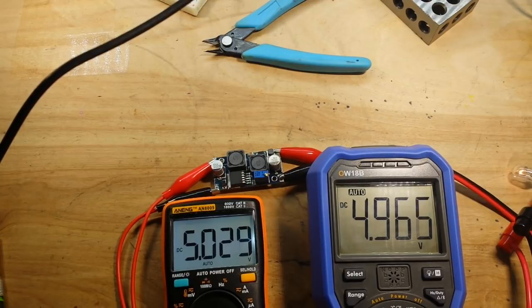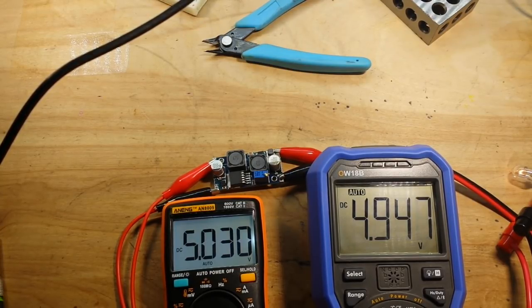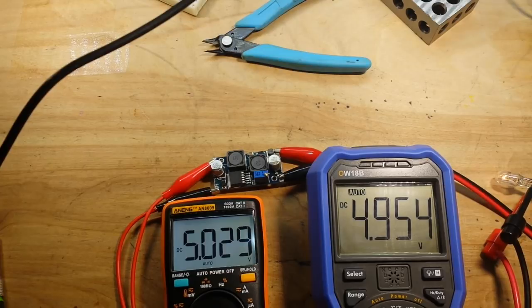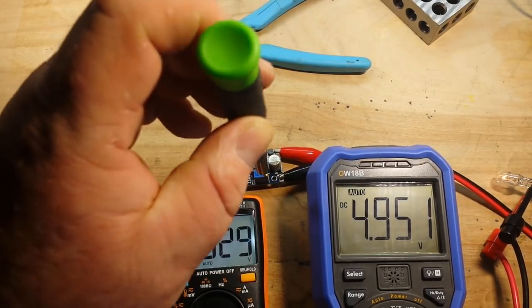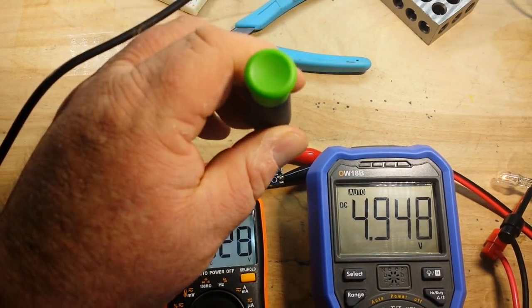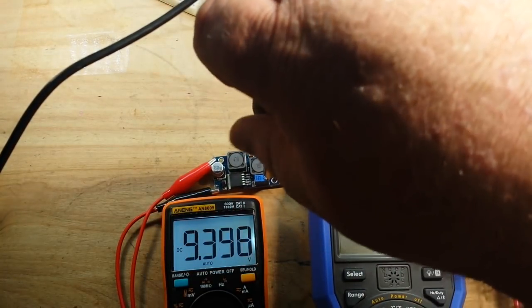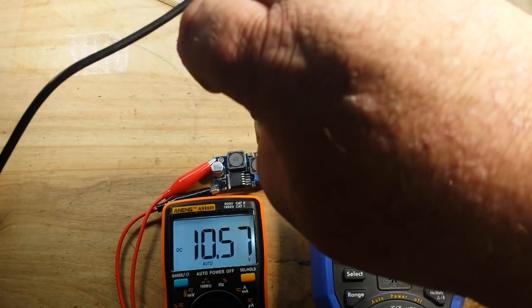Okay, 5.03, 4.9, so we're almost completely even. Who knows how accurate these meters really are. So from 5 volts in we're getting 5 volts out. You can see our light is barely lit, so let's put this guy in boost mode.